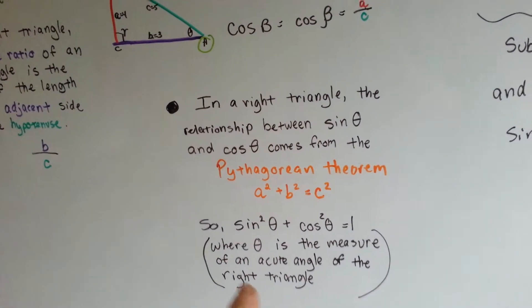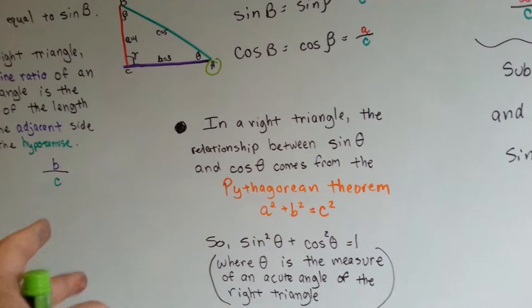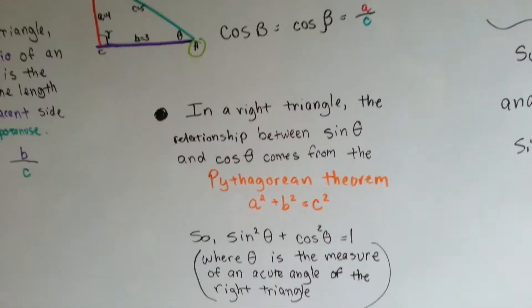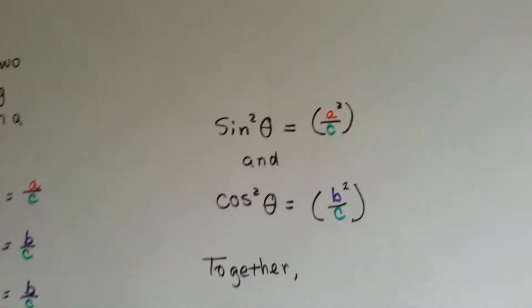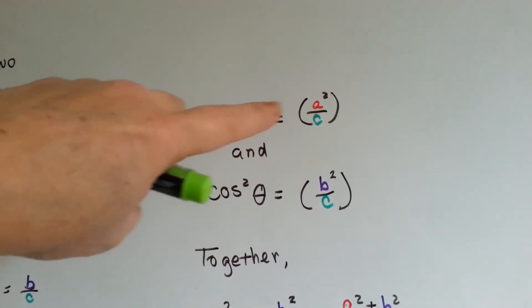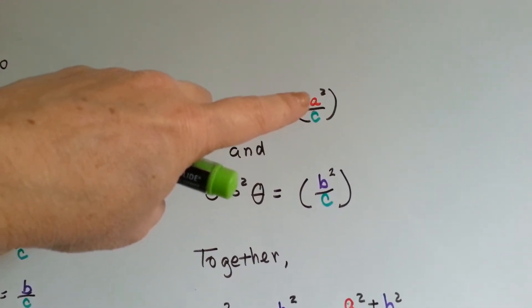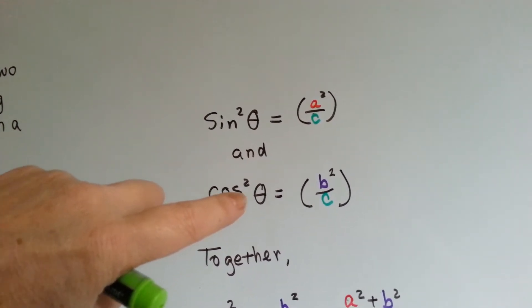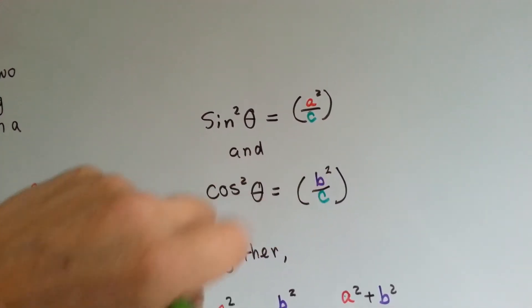Theta is the measure of an acute angle of a right triangle. It just is representing the angle measure. So, let's look at this. The square of sine theta is A over C squared, and the square of cosine theta is B over C squared.